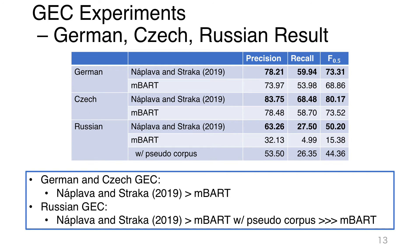For German, Czech, and Russian results using a single model: in the German GEC task, the multilingual BART model achieves 4.45 F0.5 points lower than the task-oriented model. In the Czech GEC task, multilingual BART achieves 6.65 F0.5 points lower than the task-oriented model. This may be because the task-oriented model is pre-trained with only the target language, whereas multilingual BART is pre-trained with 25 languages, resulting in information from other languages being included as noise. Nevertheless, multilingual BART models show sufficiently high performance for several languages without using a pseudo-corpus.